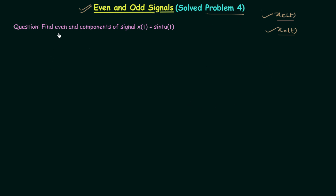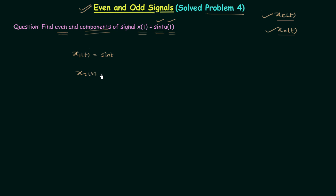In this problem we need to find out the even and odd components of signal x(t) which is equal to sin(t)·u(t). So signal x(t) is composed of two different signals: the first one is sin(t) and the second one is u(t). Let's say x1(t) = sin(t) and x2(t) = u(t).